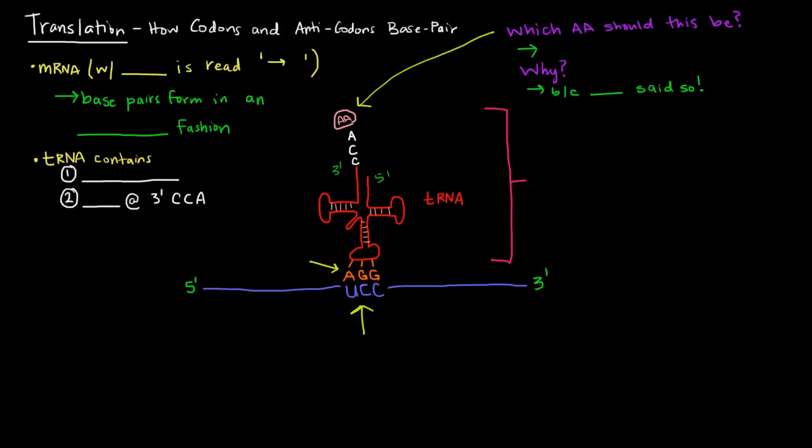The mRNA with the codon is read by the tRNA 5' to 3'. The tRNA is actually running in the opposite direction and the base pairs that form form in an antiparallel fashion.